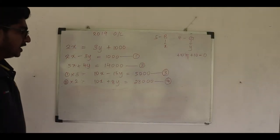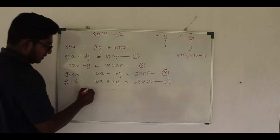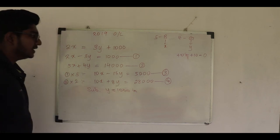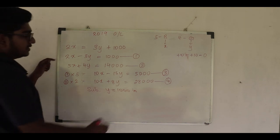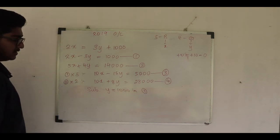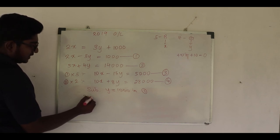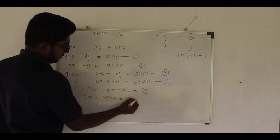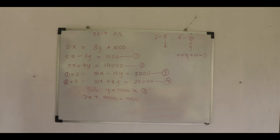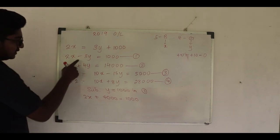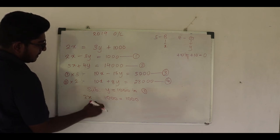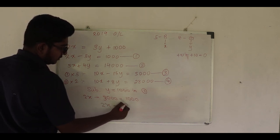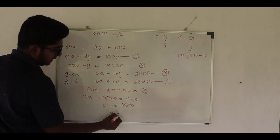Now we substitute y equals 1,000 into equation 1. Equation 1 is 2x minus 3y equals 1,000. Substituting: 2x minus 3 times 1,000 equals 1,000, so 2x minus 3,000 equals 1,000, giving 2x equals 4,000, and therefore x equals 2,000.